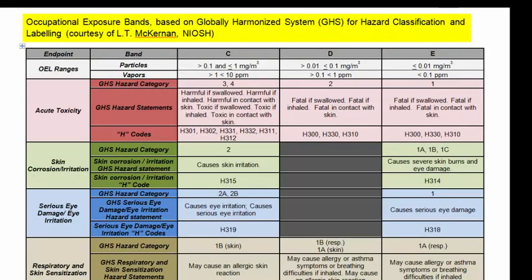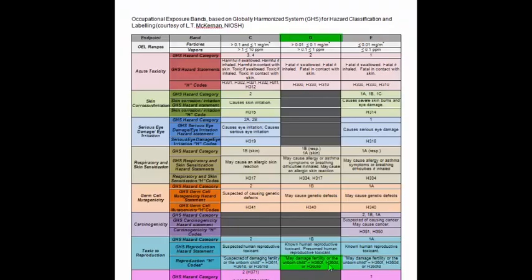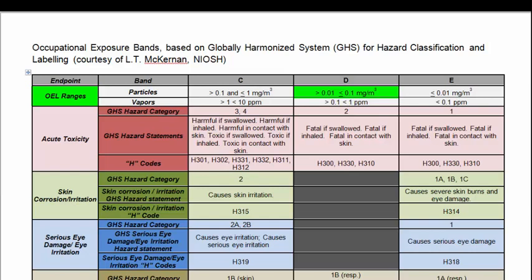Using the H codes, place the cerium oxide nanoparticle dispersion into an occupational exposure band using the NIOSH GHS-based occupational exposure band chart. Here, H315 and H319 fall on band C. However, H360 falls on band D. Since band D is more protective than C, the cerium oxide nanoparticle dispersion is placed in band D, with an occupational exposure limit range of greater than 0.01 and less than 0.1 mg per cubic meter.